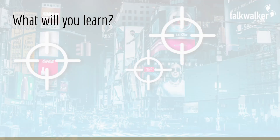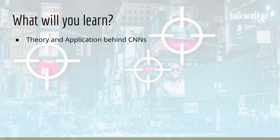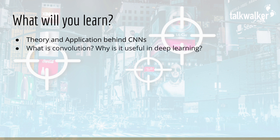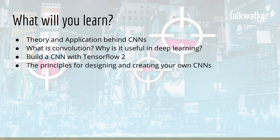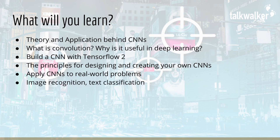So what will you learn in this course? You will learn both the theory and application of convolutional neural networks. You will learn what convolution is and why it is useful in deep learning. You will learn how to build a CNN using TensorFlow 2, the principles behind designing your own CNN architectures, and the best practices for building CNNs today. You will learn how to apply CNNs to practical real-world problems including image recognition and text classification, how to pre-process that data in code, and how to save your model for later use and make predictions with your trained neural network.